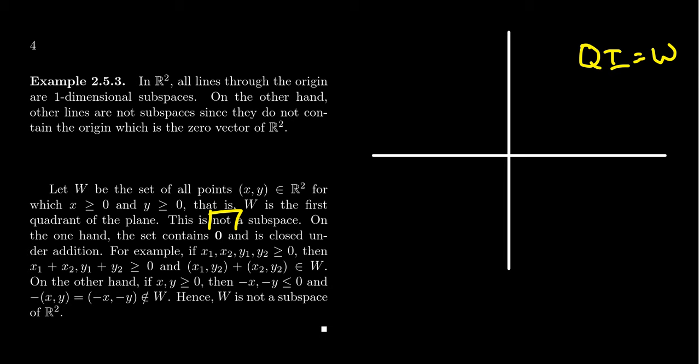Now, why is it not a subspace? What stops us here? Now, we have to be very careful when we look at this correctly. Now, does Q1, the first quadrant, does it contain the zero vector? And the answer is going to be yes.